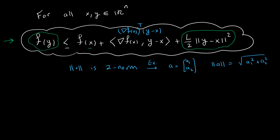Let me introduce some notations I'll use from now on. The angle brackets denote the inner product of two vectors. The two vertical lines denote the two-norm, which is the square root of the sum of squares of each component. Using these notations, we are going to prove that if a function has the Lipschitz continuity property for the gradient, we can have this inequality.